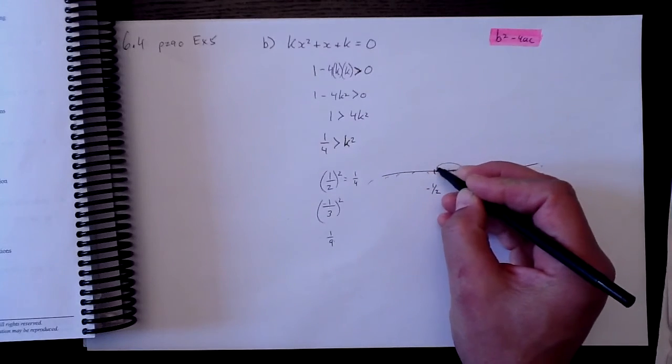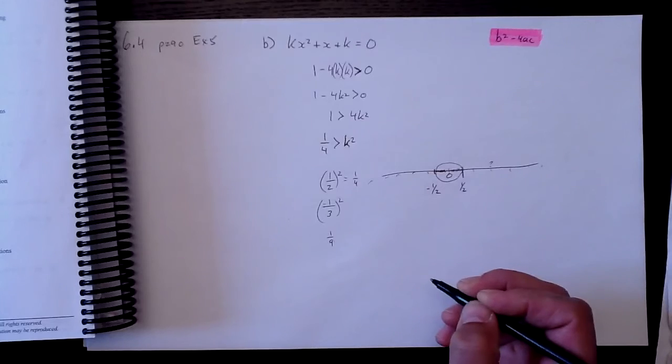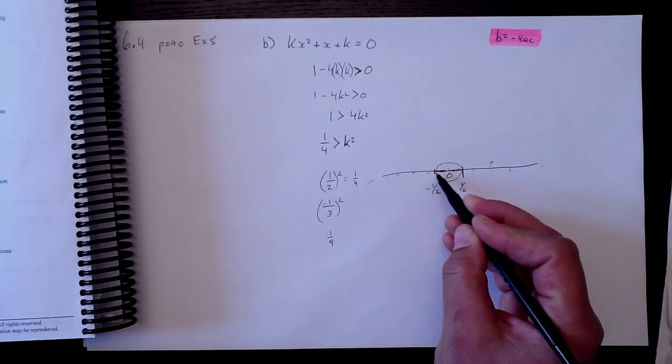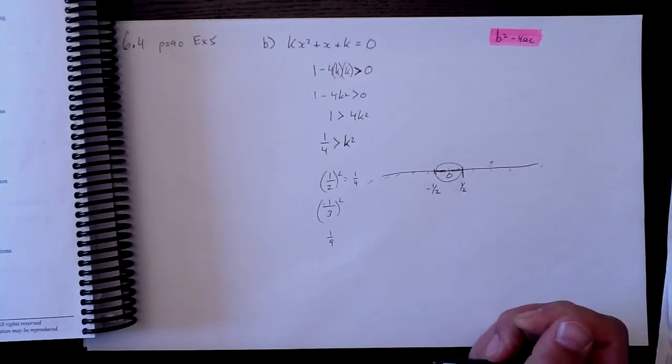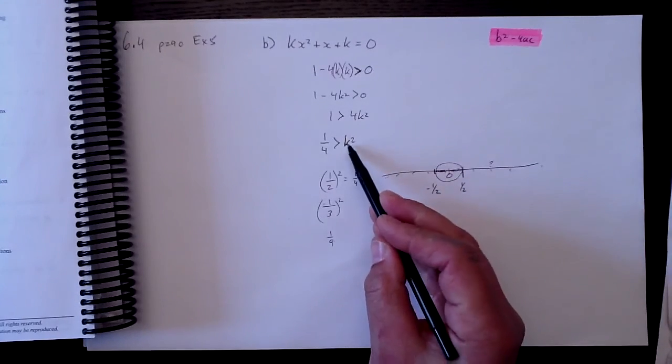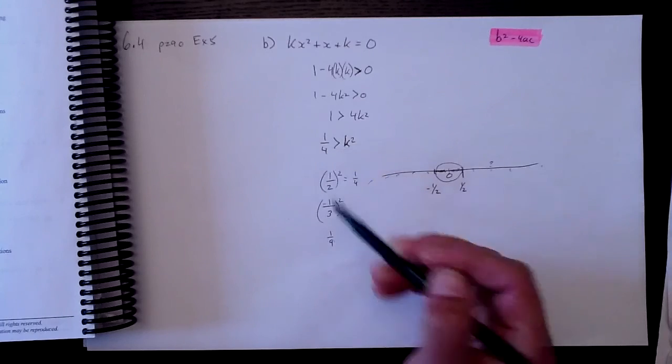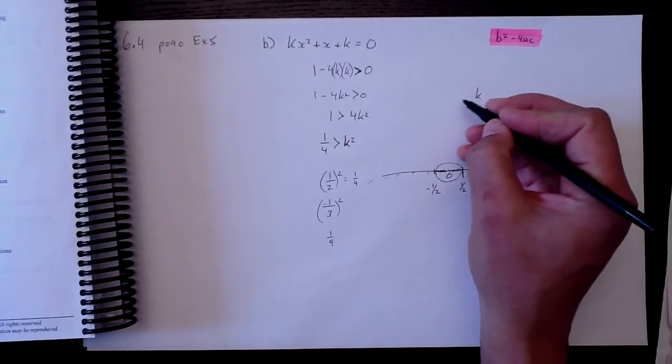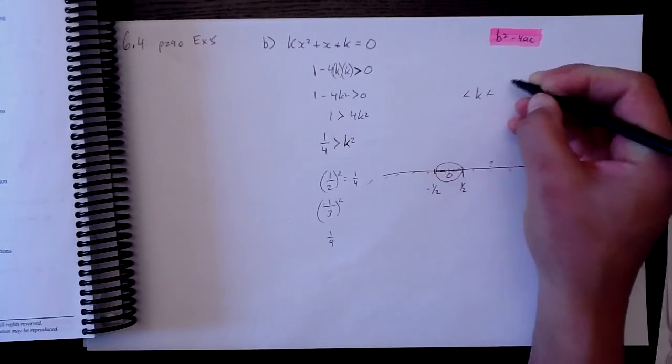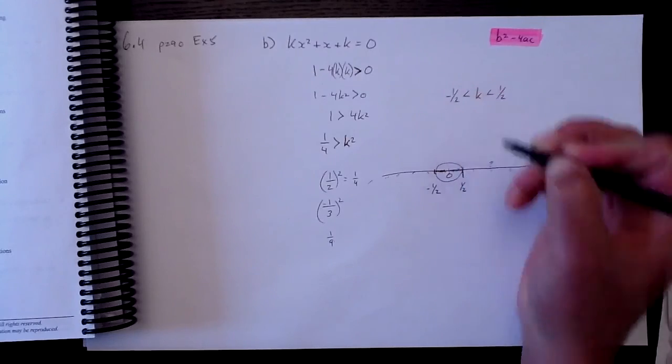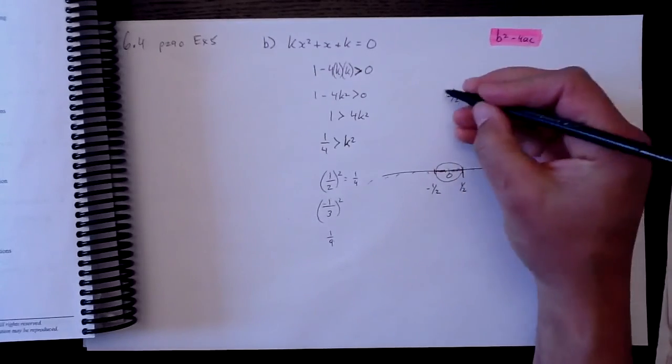But what it means is that anything in this section here, any number in this area less than 1 half and larger than negative 1 half, any one of those could go in for k. It would be squared. It would be less than 1 quarter. So my range of solutions, then, are those between negative 1 half and 1 half, and that's my answer.